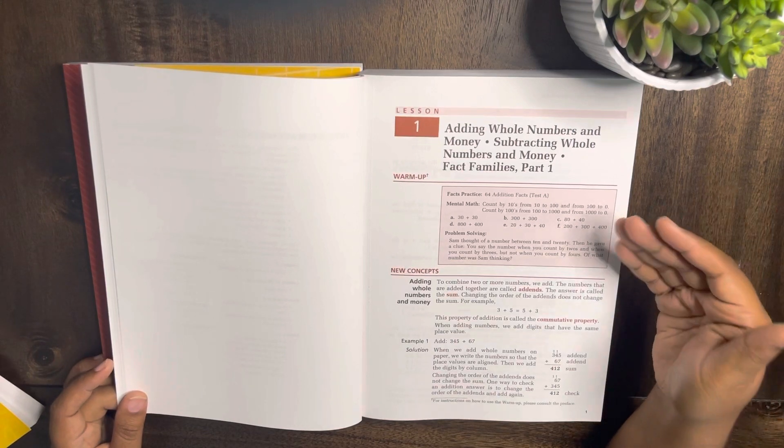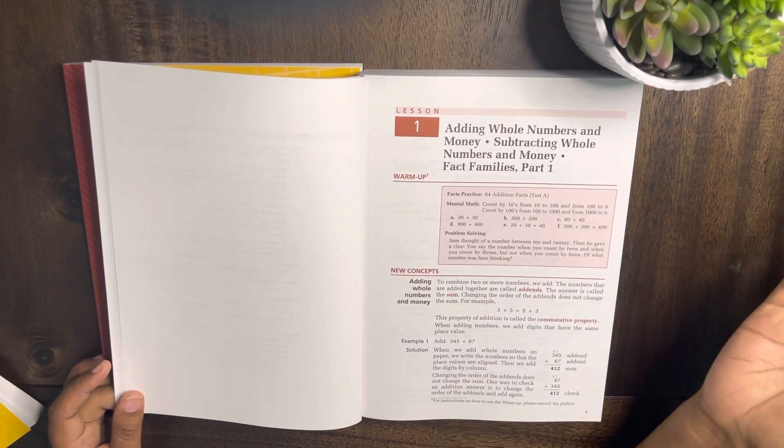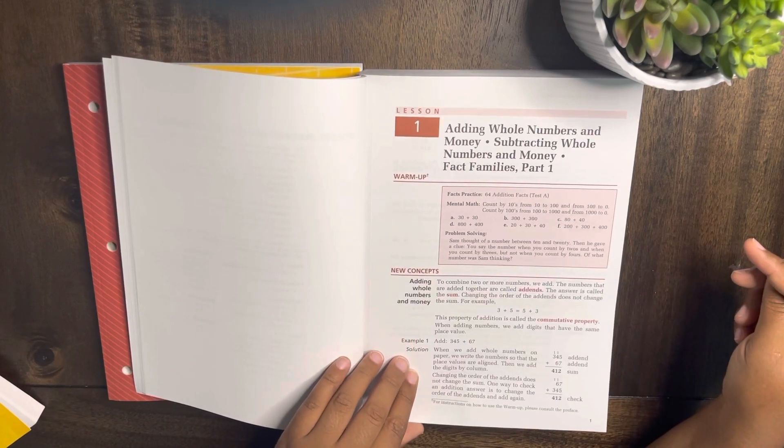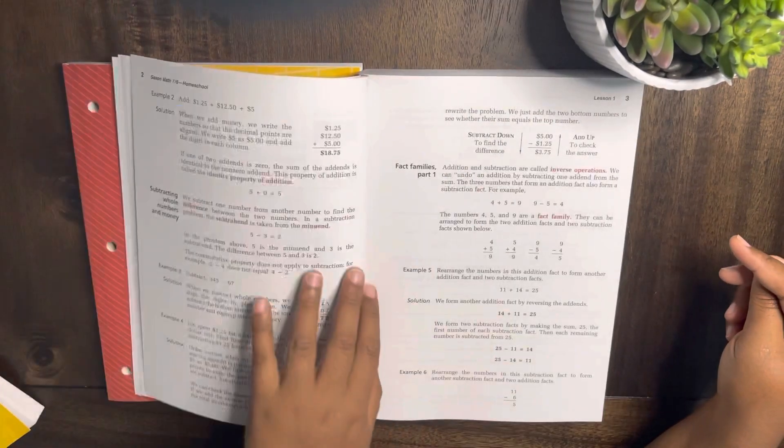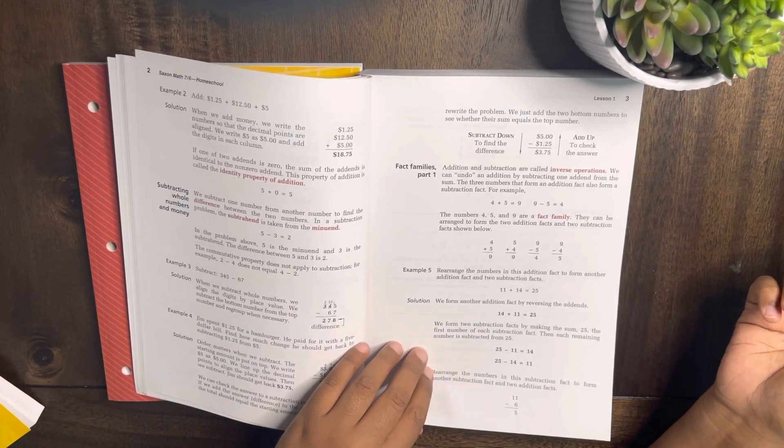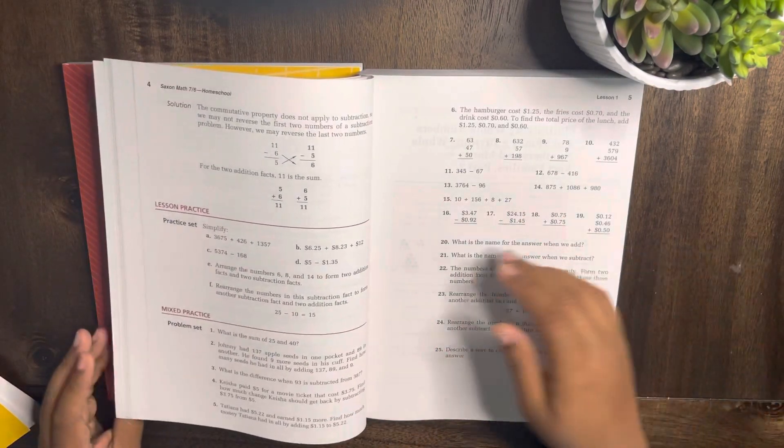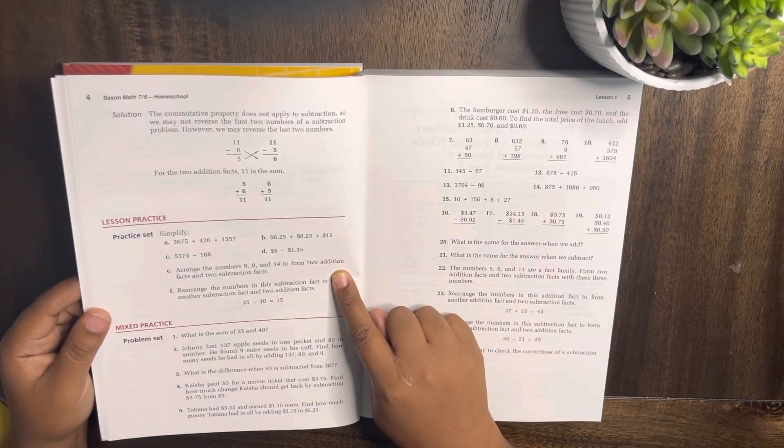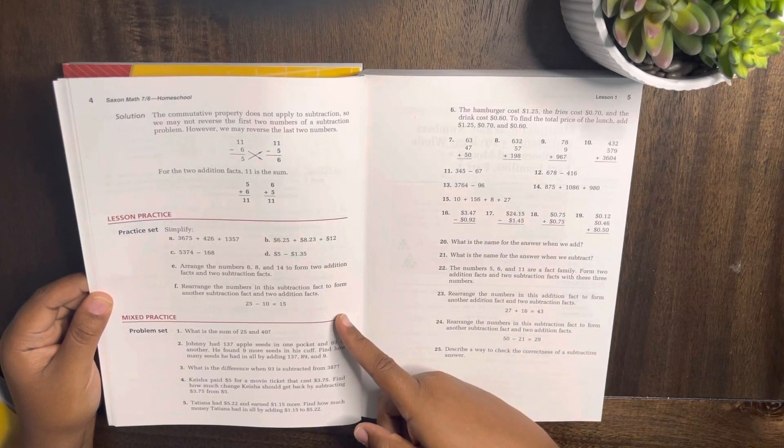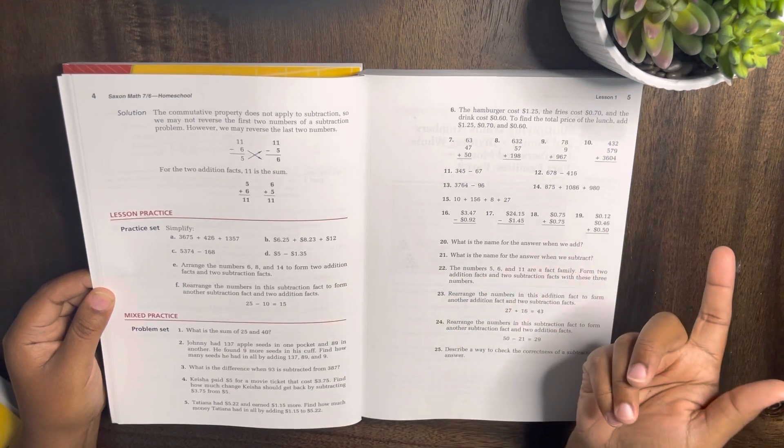New concept - this is basically what you would go over with your child, or if they are very independent they can do it by themselves. If they don't understand, that's when you step in and help them. Then lesson practice doesn't look like a lot - this one only has A through F, so that's not a lot of practice. This should be quick for most kids to do.